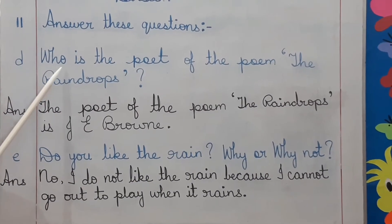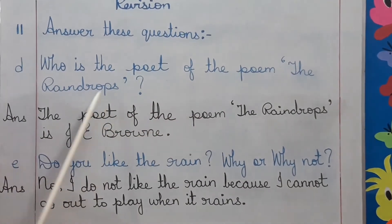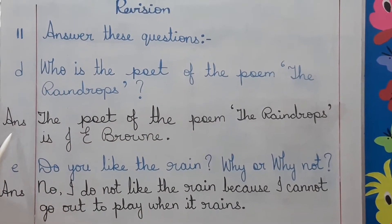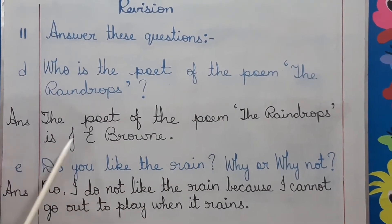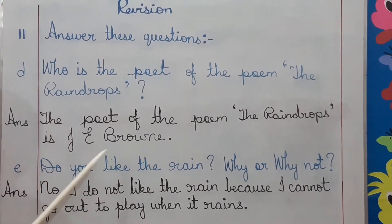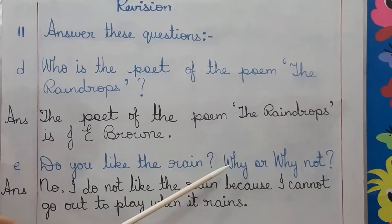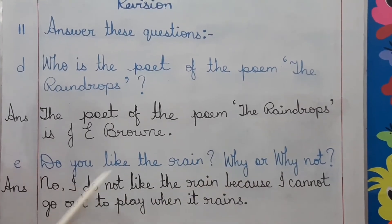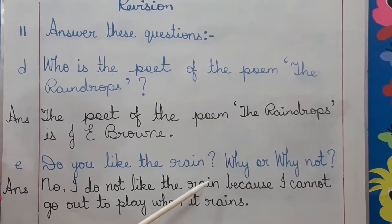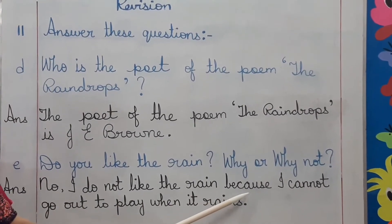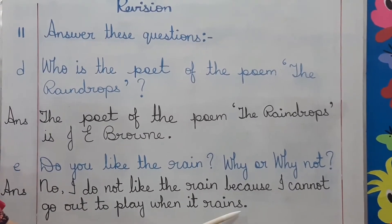D. Who is the poet of the poem The Raindrops? Answer: The poet of the poem The Raindrops is J. E. Brown. E. Do you like the rain? Why or why not? Answer: No, I do not like the rain because I cannot go out to play when it rains.